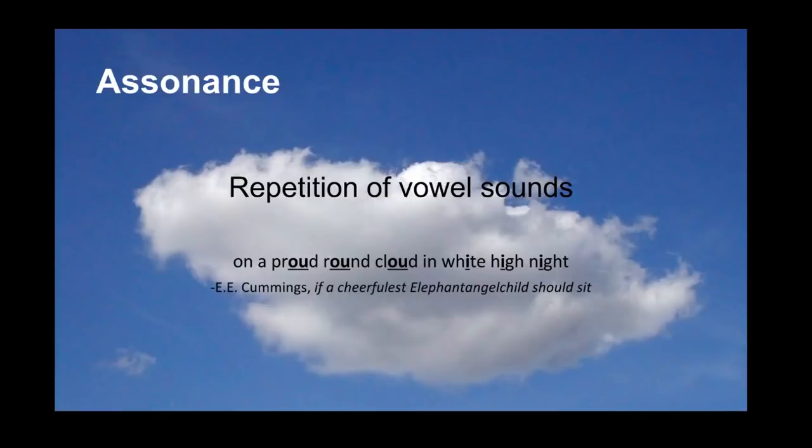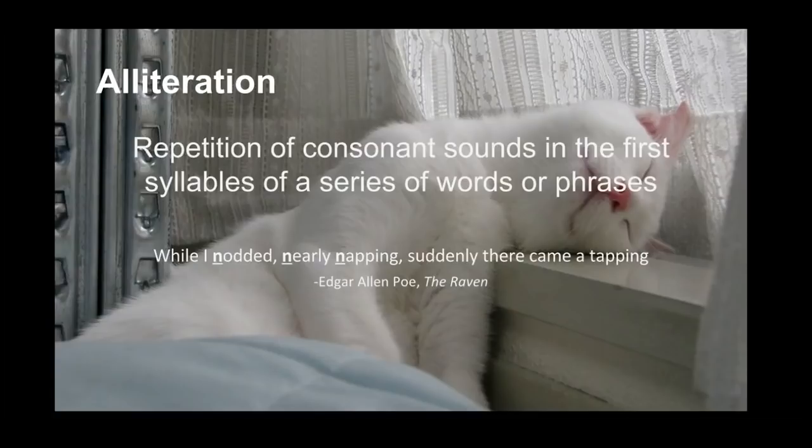Closely related to assonance is alliteration — the repetition of consonant sounds in the first syllables of words and phrases. 'While I nodded nearly napping, suddenly there came a tapping.' The repeated use of 'N' over here is what creates the alliterative effect.